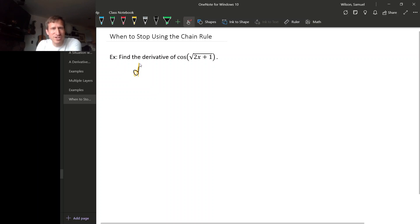And the reason that this question comes up is because people will see something like this, square root of 2x plus 1, and they'll say, well I need to use the chain rule because there's an inside